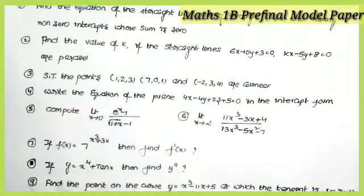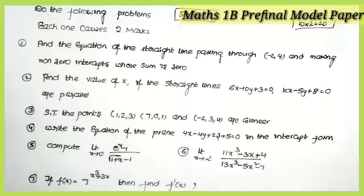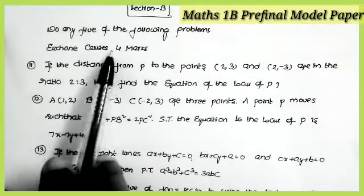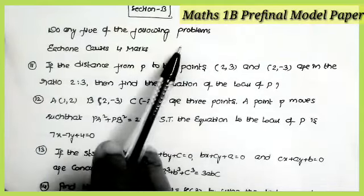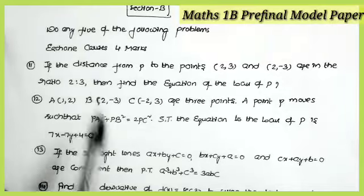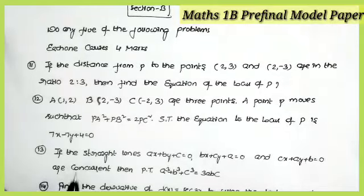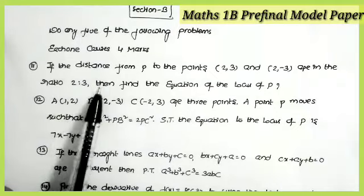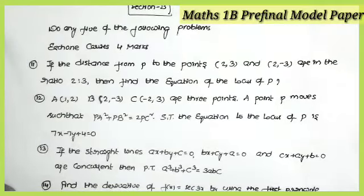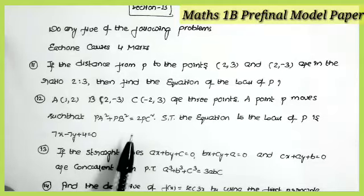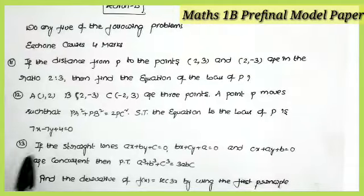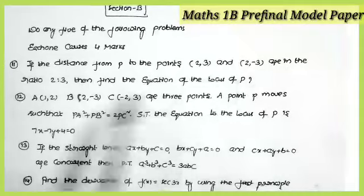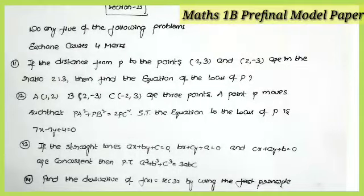Now let us see the four-mark problems. Section B: do any five of the following problems; each one carries four marks. Seven questions are given but you have to attempt only five. Questions 11 and 12 are from the topic Locus — a very easy and important topic. Question 11: if the distance from P to the points (2, 3) and (2, −3) are in the ratio 2:3, find the equation of the locus of point P.